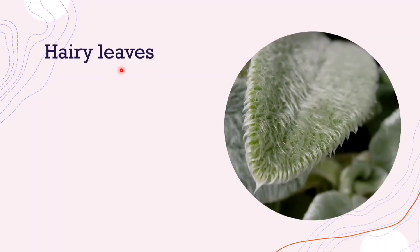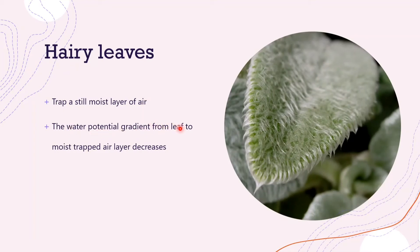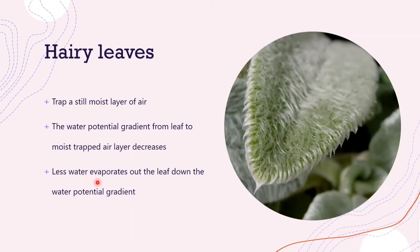Then we have hairy leaves. These hairy leaves trap a still, moist layer of air around the leaf. This works in the same way as rolling the leaf — the water potential gradient from the leaf to the moist trapped air decreases. Because the water potential around the leaf is now higher, the water potential gradient is lower, so less water will evaporate out of the leaf down this water potential gradient.